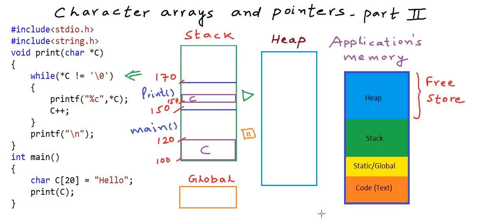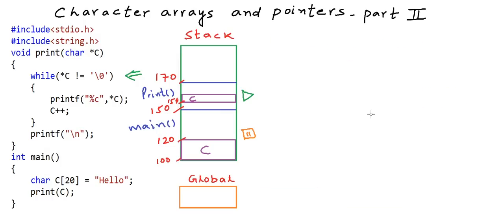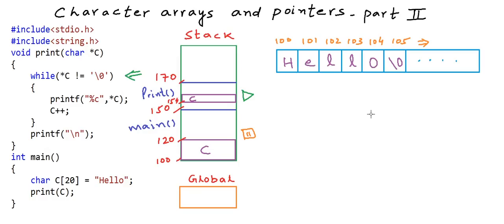To run through this code further, I'll clear some space here now. I'll draw this array C outside the stack here. We have an array of size 20, but we are only showing the first six positions in the array from address 100 to 105. The sixth character is a null character and the first five characters are the characters of word hello. Now we have this another guy which is C of print which is a character pointer at address 154 that stores address 100, so it points to the first element of the array.